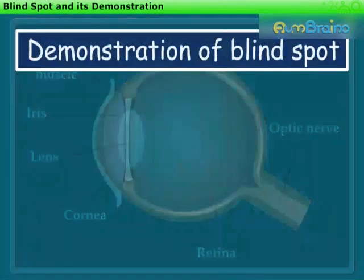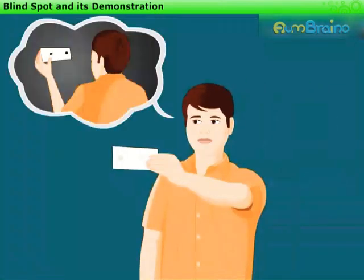Let us demonstrate the existence of the Blind Spot with the help of an activity. For this, take a sheet of paper. Make a round mark, that is a spot, and a cross on it, as shown.